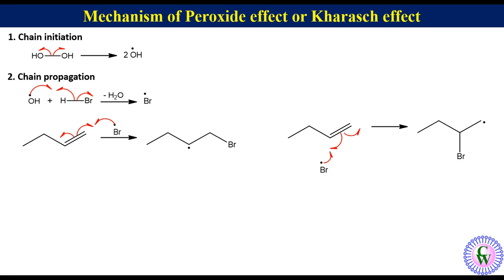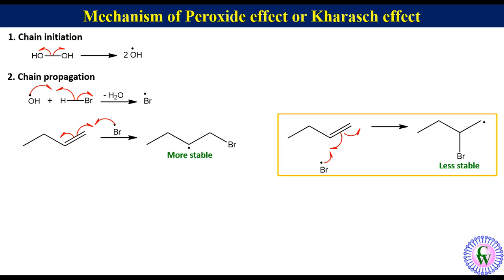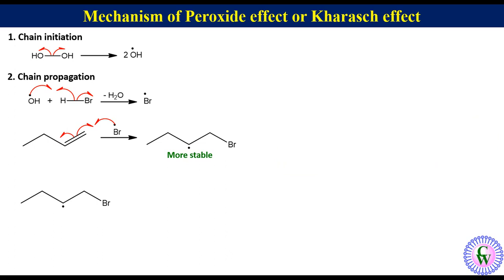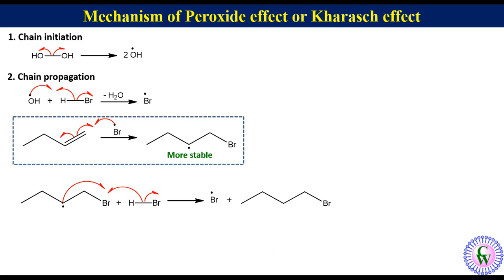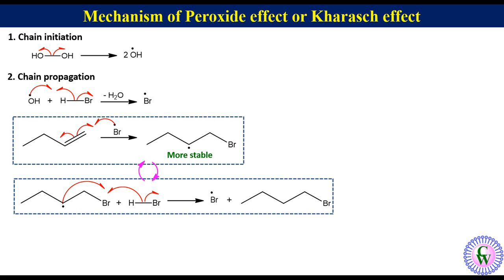We know that the secondary alkyl radical is more stable than the primary. So the secondary alkyl radical is predominantly formed and the reaction proceeds mainly through the secondary radical. The secondary alkyl radical then abstracts a proton from HBr to produce a bromine radical and the anti-Markonikov product. The bromine radical is regenerated, therefore peroxide is required only in catalytic amount just to initiate the process. The bromine thus regenerated again reacts with alkene to produce the secondary alkyl radical, and these two processes are repeated one after another until the alkene is completely consumed.